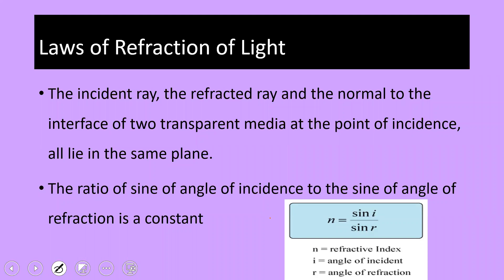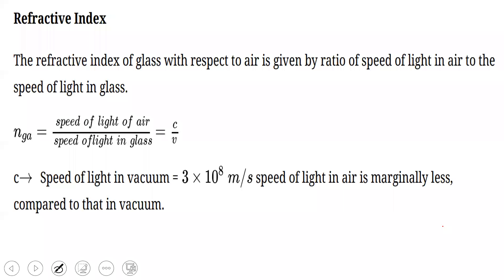Laws of refraction: the first law states that the incident ray, the refracted ray, and the normal to the interface of the two transparent media all lie in the same plane. The second law — Snell's law of refraction — states that the ratio of the sine of the angle of incidence to the sine of the angle of refraction is a constant for a given pair of media and for light of a given color. The formula is: n = sin(i) / sin(r), where n is the refractive index, i is the angle of incidence, and r is the angle of refraction.